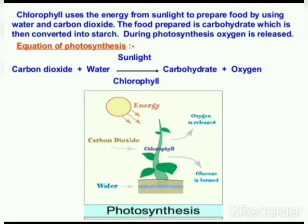Chlorophyll uses the energy from sunlight to prepare food using water and carbon dioxide. The food prepared is carbohydrate, which is then converted into starch. During photosynthesis, oxygen is released. In equation form: carbon dioxide + water, in the presence of sunlight and chlorophyll, is converted into carbohydrate + oxygen.